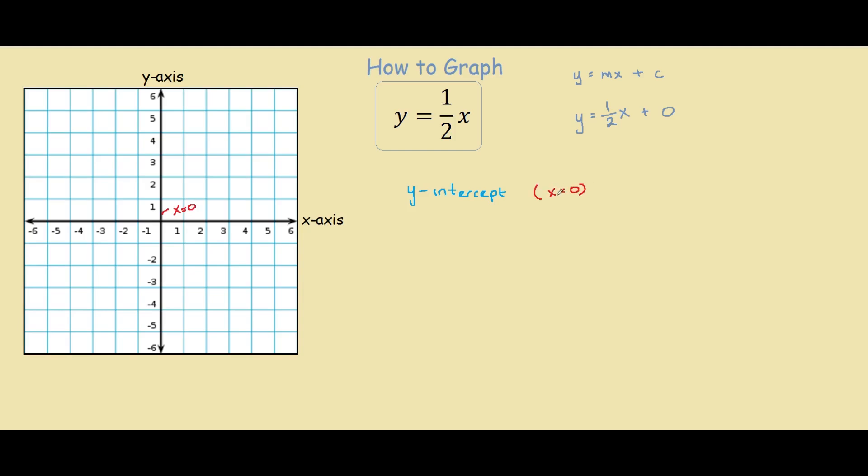So we know x equals zero, we plug it into our equation. We have y equals to half times zero, which is simply zero. So we have our first point on the graph, that's zero, zero. x equals zero and y equals zero. Here is our first point.